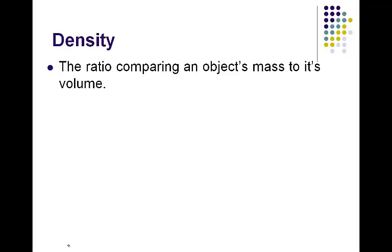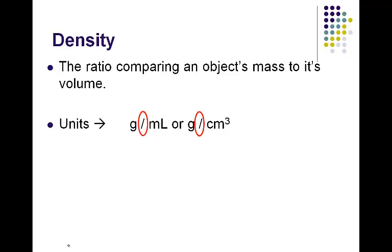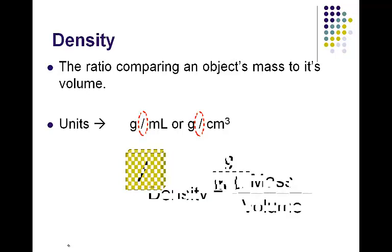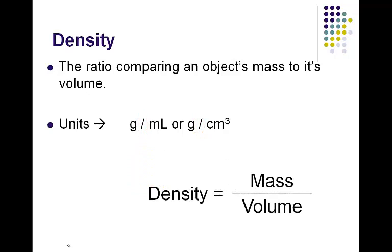Density is a ratio comparing an object's mass to its volume. The units are grams per milliliter or grams per cubic centimeter, because these are two units we can use to measure volume. Remember that the slash symbol means division. The equation for density is: density equals mass over volume. So let's practice.